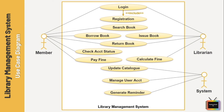Finally, to give an example of generalization, I am using generalization for the actor member. Generalization of an actor means that one actor can inherit the role of another actor, so several actors can play the same role in a particular use case. In a library management system, customers can be of two types: student and staff.